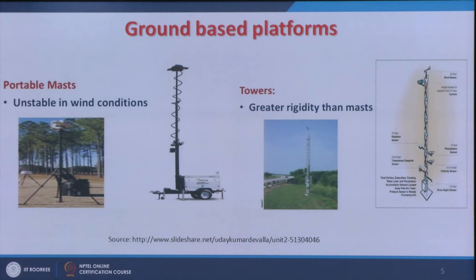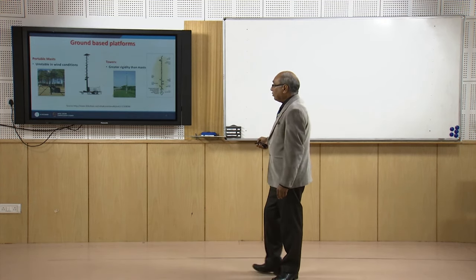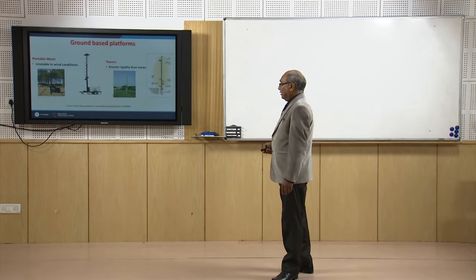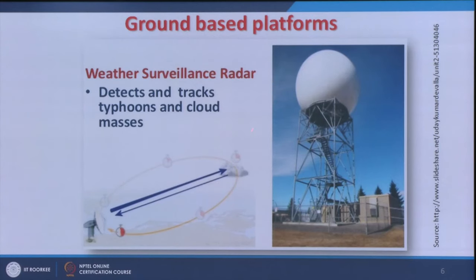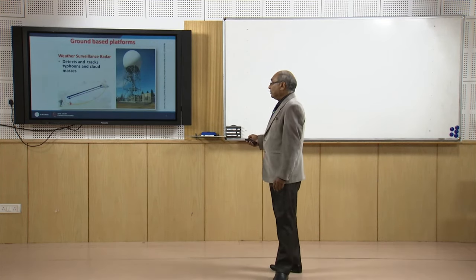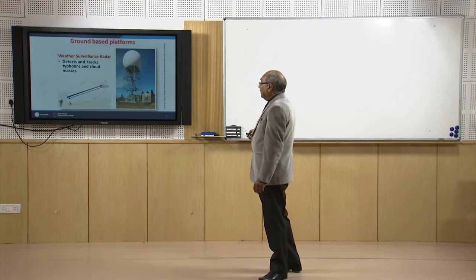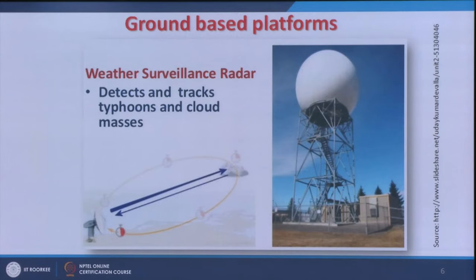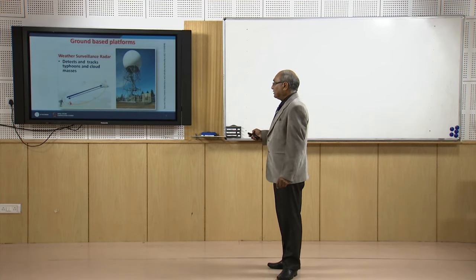That is also some kind of remote sensing. Unstable and temporary portable masts are not as stable, so depending on the application people go for these ground-based studies. Then there are weather surveillance radars especially in airports or where the weather is very dynamic — these systems detect treks, typhoons, and cloud masses. India is also considering weather surveillance radars for cloud burst events, especially in Himalayan terrain. That kind of ground-based platform is being used extensively depending on the application.